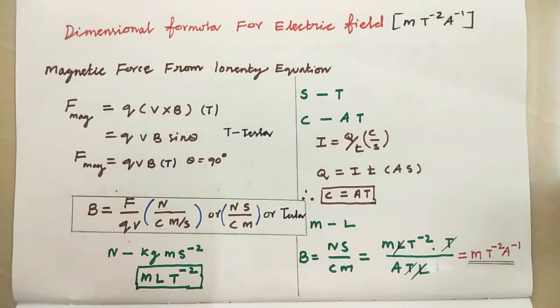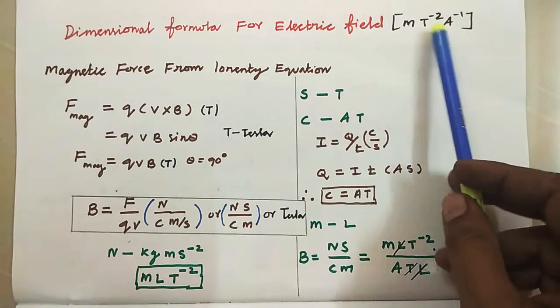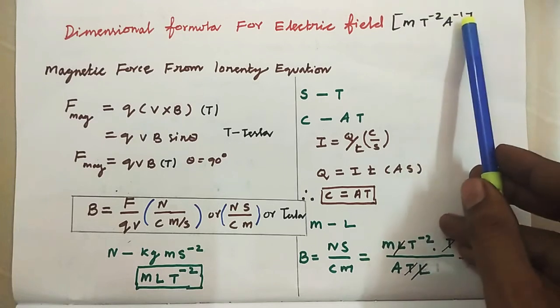Dimensional formula for electric field, M, T power minus 2, A power minus 1.